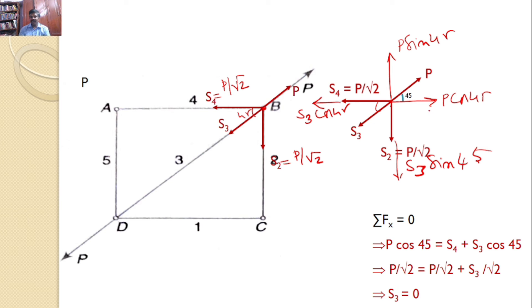Now, by taking sigma fx equals 0, there is only one force acts towards right side and two force, S3 and S4 acts towards left side. So, we can say P cos 45 equals S4 plus S3 cos 45. And you know that cos 45 is 1 by root 2. P by root 2 equals S4, already known this is P by root 2 and S3 is also S3 into cos 45 is 1 by root 2. So, it is S3 by root 2. So, P by root 2, P by root 2 gets cancelled and we can find S3 equals 0. Hence, the answers are S1 equals S2 equals S4 equals S5. All these values you will get to P by root 2 and you can find S3 equals 0.